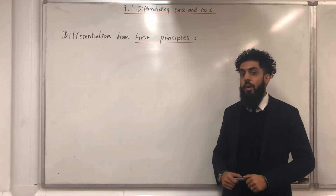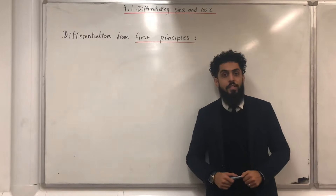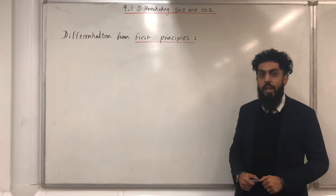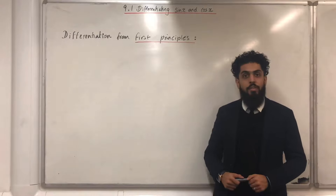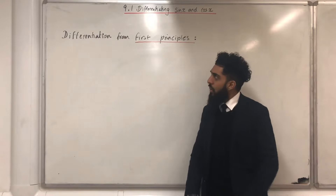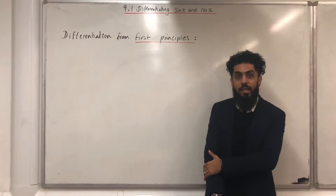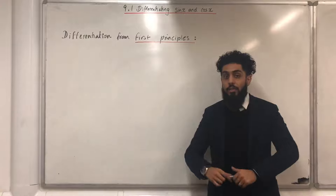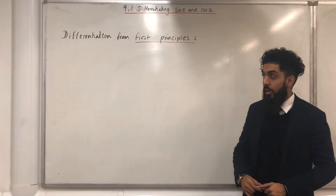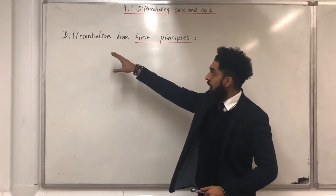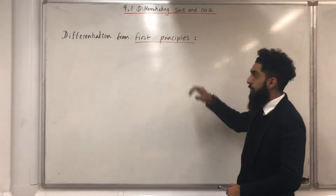9.1 represents Chapter 9, Section 1 of the Pearson A-Level Pure Maths, Year 2 Textbook. Before we look at differentiating Sine X and Cos X, I would like to go over the concept of differentiation from first principles.